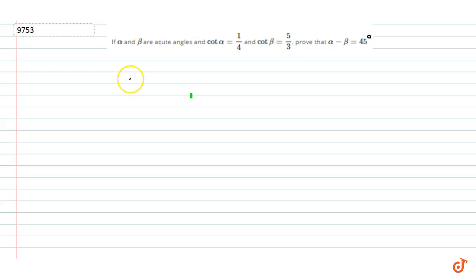Here it is given that cot α equals 1/4, therefore tan α equals 4. Cot β equals 5/3, therefore tan β equals 3/5.